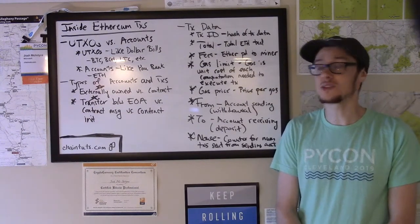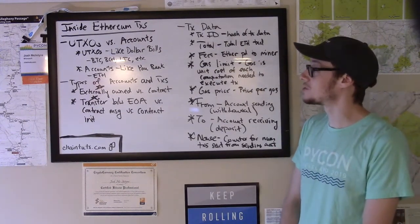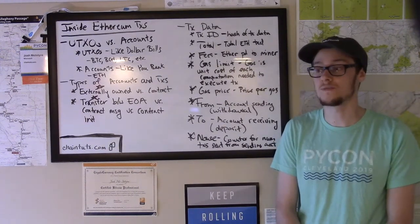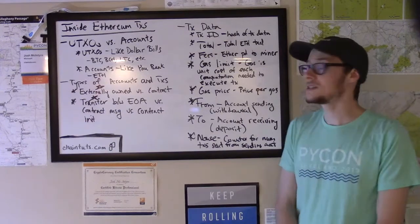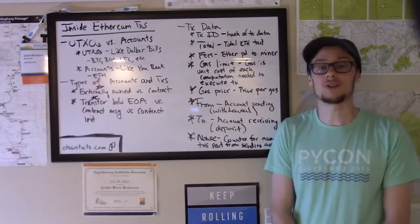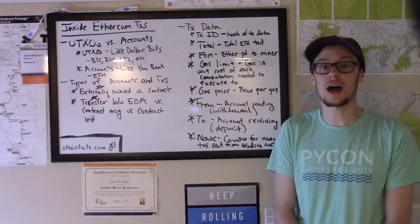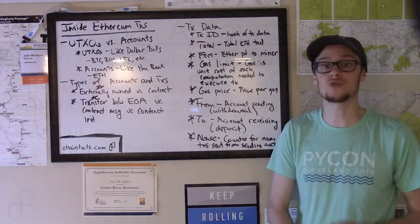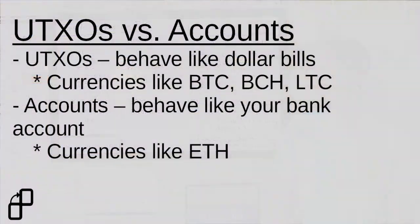First let's take a look at the difference between UTXO based blockchains and account based blockchains. With currencies like Bitcoin, Bitcoin Cash and Litecoin, transactions output UTXOs, or unspent transaction outputs. These behave very similar to dollar bills in a fiat currency — you have an output that you can spend and you have to consume it in its entirety when forming a new transaction.